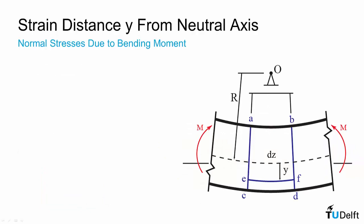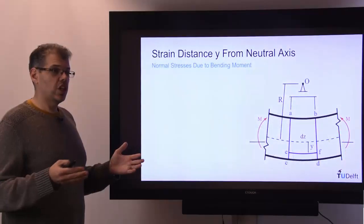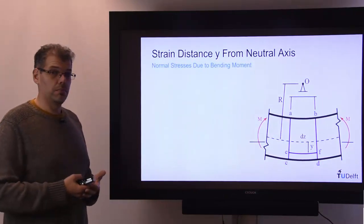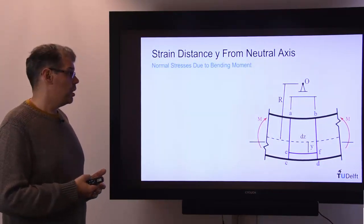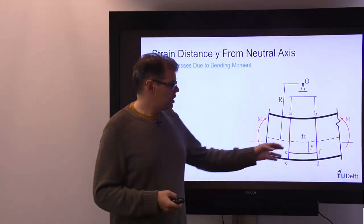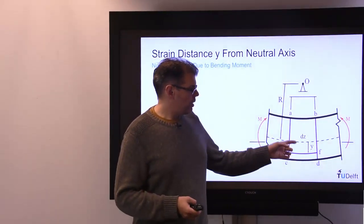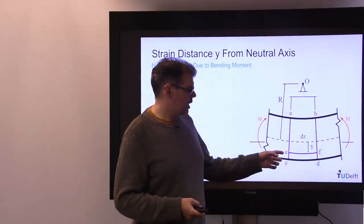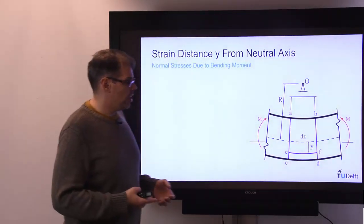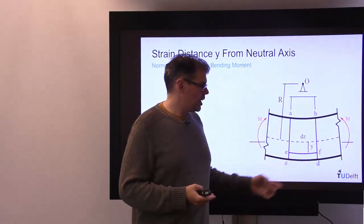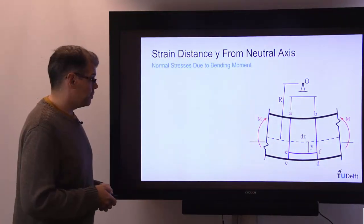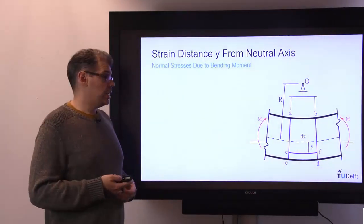Next we're going to look at what's happening at locations other than the neutral axis, because we already know no deformation occurs, no elongation or contraction occurs along the neutral axis. So we're going to look at a position of distance y from the neutral axis, so in this case along fiber EF, and look at what kind of deformation occurs there. As illustrated here we can see that EF is on the convex side of the beam, so we have an elongation. But we'll derive this in a general way.